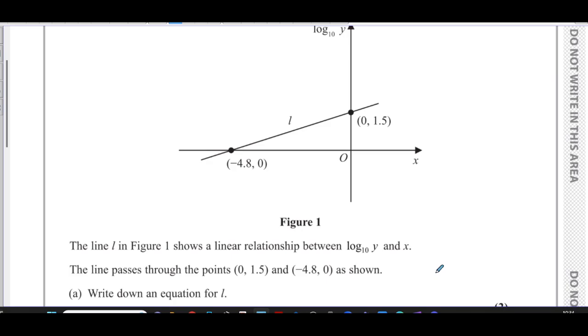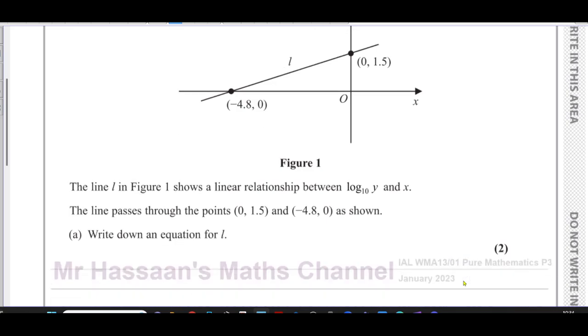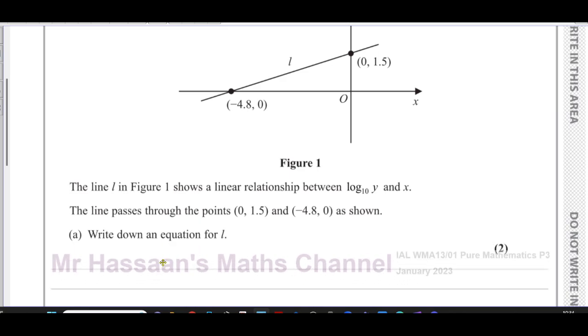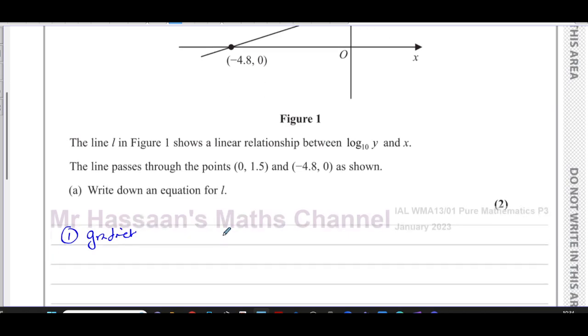So here there's not much calculation involved, as the question states 'write down.' An equation of a straight line is given by two things: the gradient and the y-intercept. So we need those two things to write down the equation of a straight line: the gradient, which is given the symbol m, and the y-intercept, which is given the symbol c.